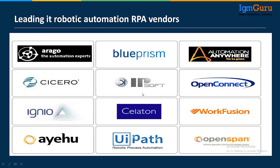There are a lot of RPA tools available in the market: Blue Prism, UiPath, OpenSpan, WorkFusion, and Automation Anywhere. The current leading tools are Blue Prism, then UiPath, then Automation Anywhere. Blue Prism is the most stable RPA tool in the world. Automation Anywhere is the least stable, while UiPath is moderate.